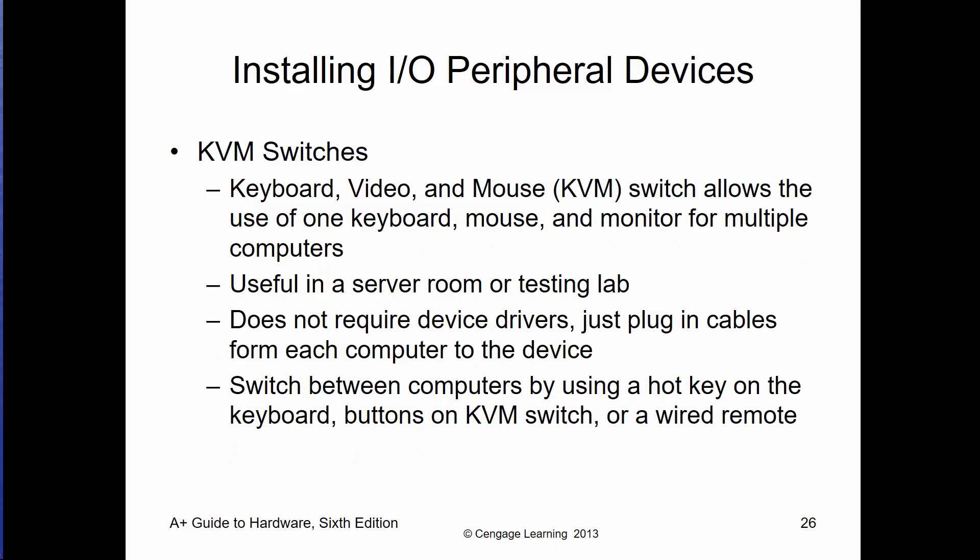A KVM switch — keyboard, video, and mouse switch — allows you to hook up more than one computer to one monitor, one keyboard, and one mouse. If you're working with multiple computers, a KVM will auto-switch or switch based on your needs.